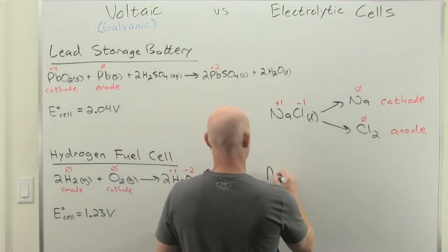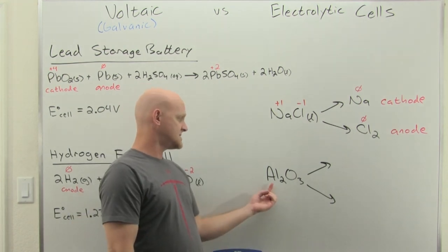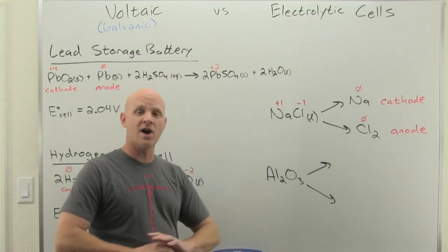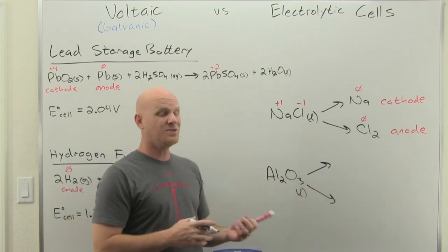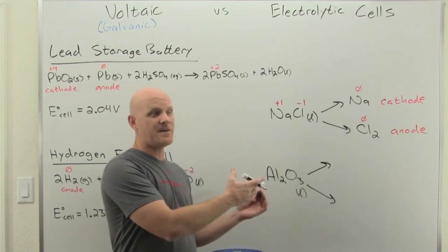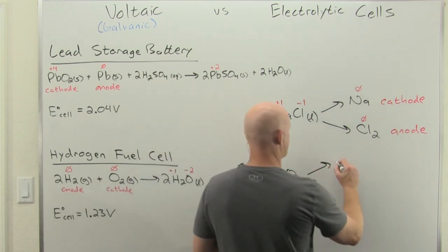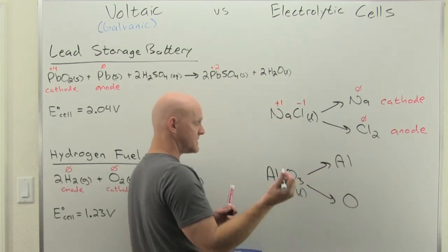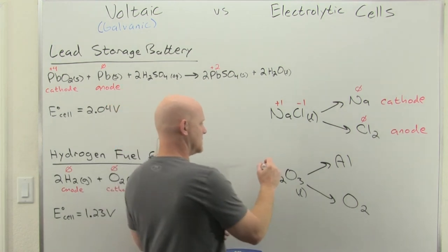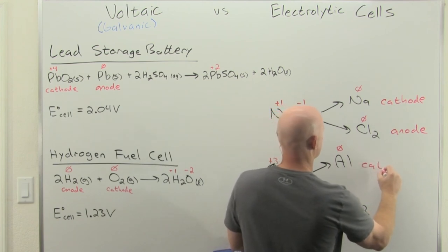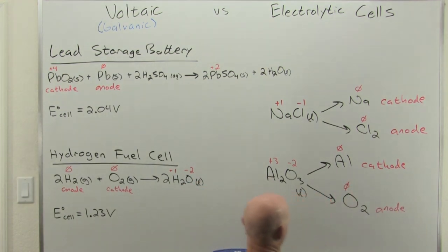One more example: aluminum oxide (Al2O3), a binary salt with a simple cation and anion. For molten electrolysis, we predict the products are elemental aluminum and elemental oxygen (O2). Aluminum goes from +3 down to zero oxidation state — that's reduction, occurring at the cathode. Oxygen goes from −2 up to zero oxidation state — that's oxidation, occurring at the anode.